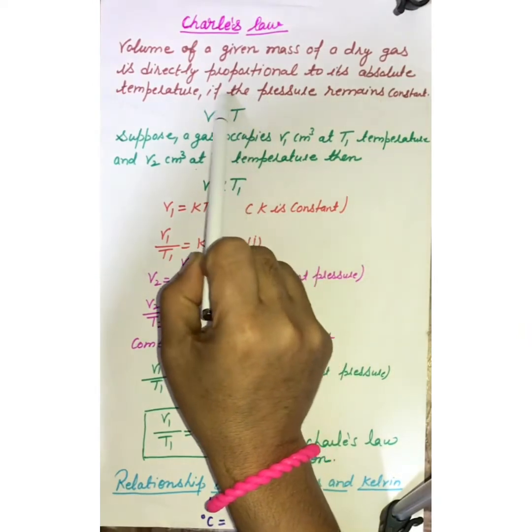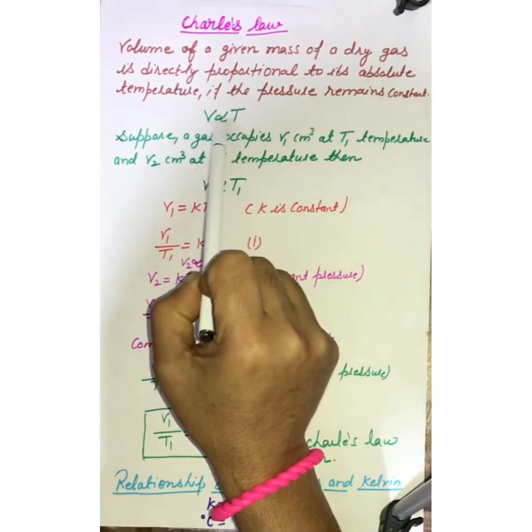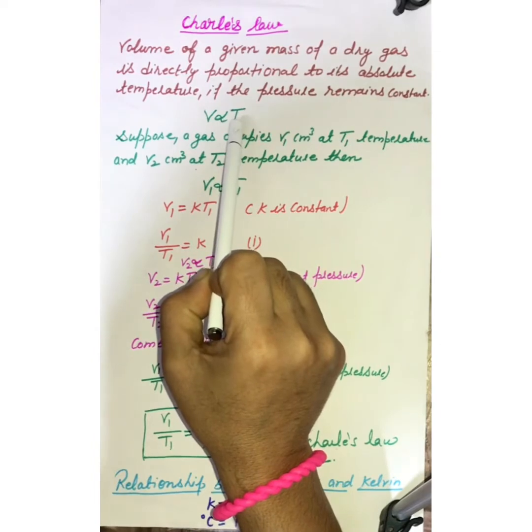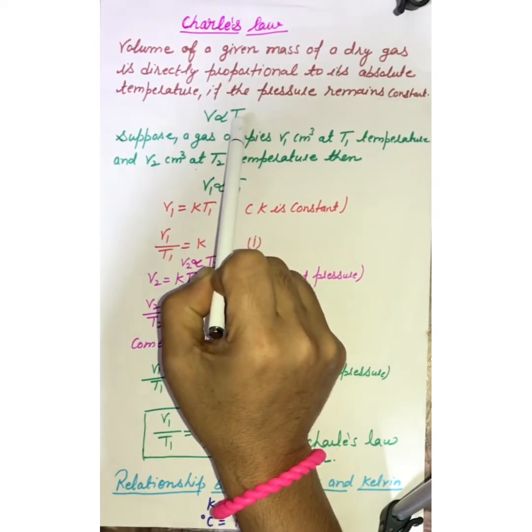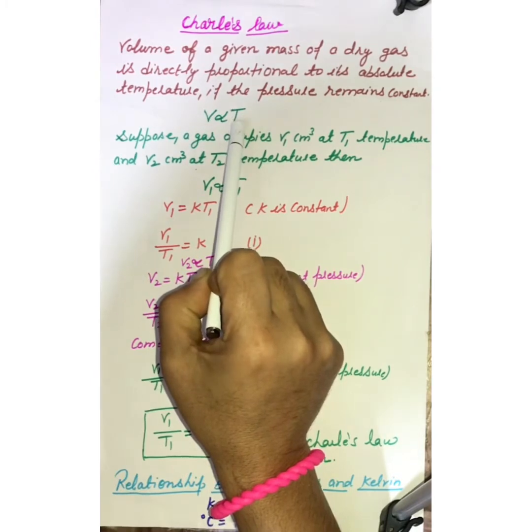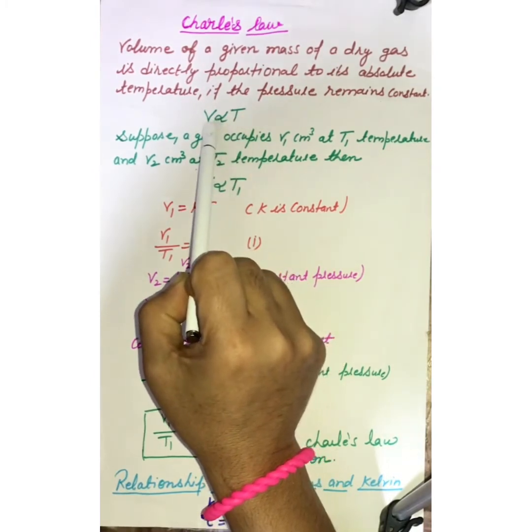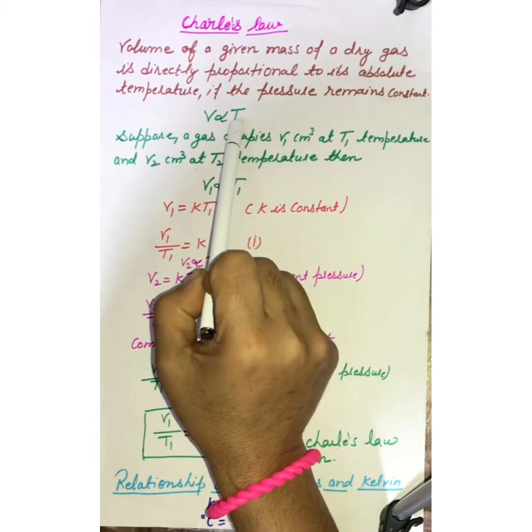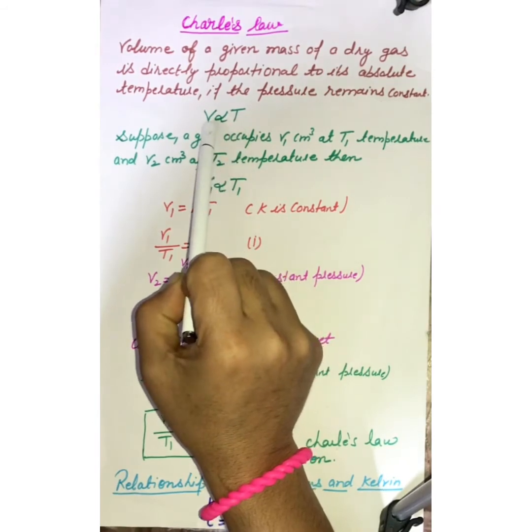Mathematical term of this Charles law, it is V directly proportional to T. What is the meaning of this mathematical term? Means if temperature is increasing, volume is also increasing. If temperature is decreasing, volume is also decreasing.